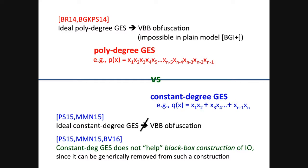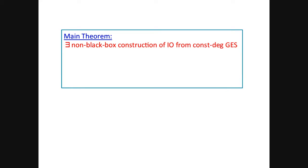Why? Because ideal polynomial degree GES is so powerful that it actually implies a VBB obfuscation, which is known to be impossible in the plain model. Whereas there has been work showing that there's no VBB obfuscation from ideal constant degree GES. And furthermore, the same line of work essentially showed that constant degree GES cannot be helpful for building black box construction of IO. In the sense that if such a construction exists, then we can generically remove this constant degree GES and obtain an IO without it. In this work, we show that constant degree GES does help, however, non-black box construction of IO.